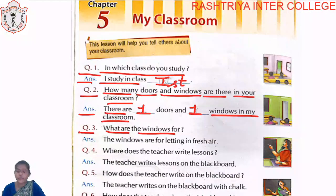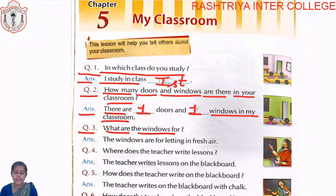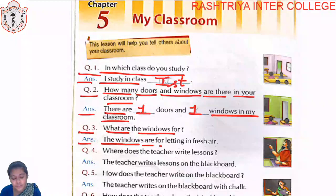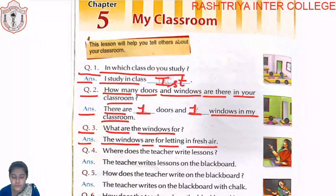Third question: What are the windows for? The answer is: The windows are for letting in fresh air. Air means 'hawa' (wind/breeze). The windows are for letting fresh air come into the classroom from outside.